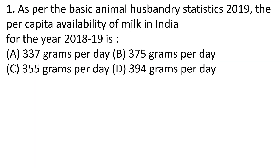First question: As per the basic animal husbandry statistics 2019, the per capita availability of milk in India for the year 2018-2019 — the answer is Option D: 304 grams per day.